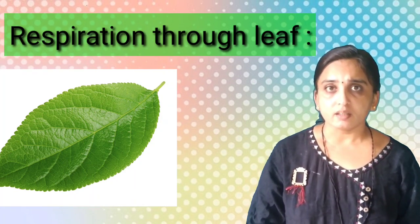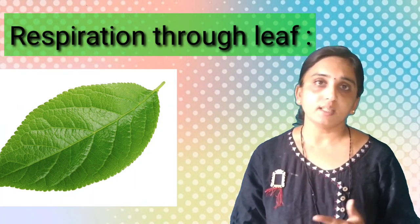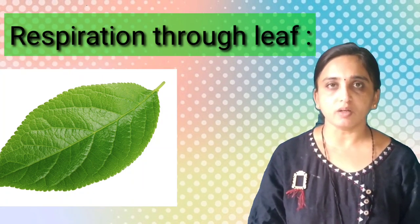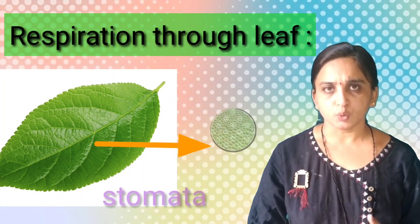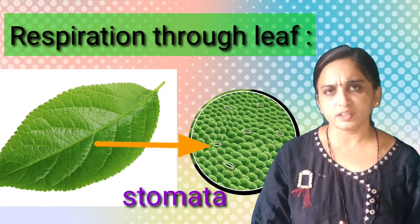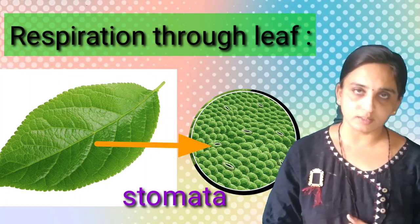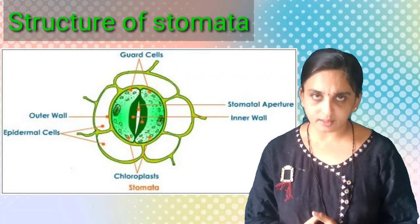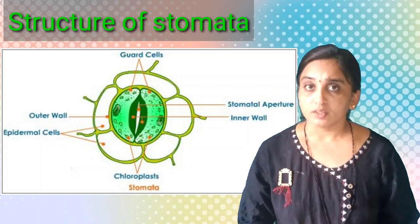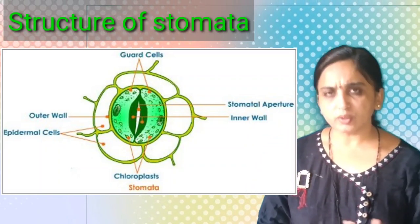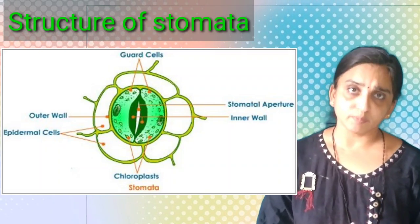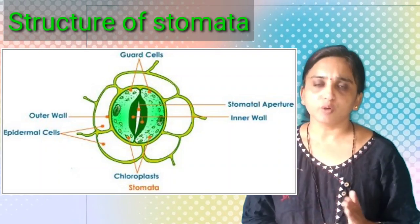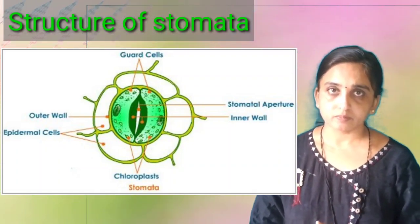How respiration takes place with the help of a leaf? On the surface of the leaf, there are many small pores present, and these pores are called stomata. Stomata are the openings through which exchange of gases occurs. The stomata are surrounded by two guard cells, and there is an opening called the stomatal pore. Through that pore, oxygen enters into the air spaces and can be diffused from one part to the other.